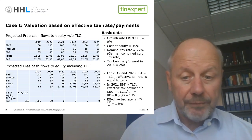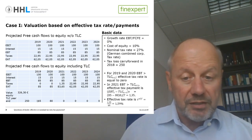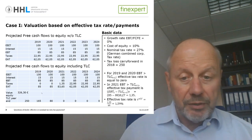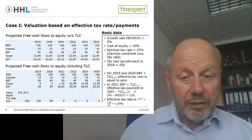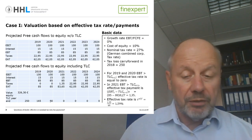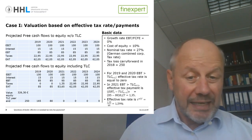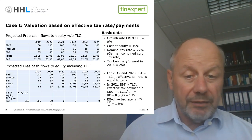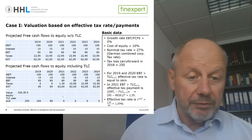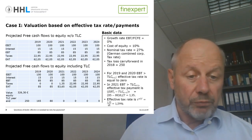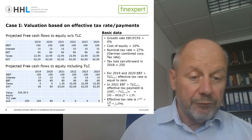We deduct the EBT from the tax loss carry forward, leaving 165 at end of year. In the next year, our EBT is again lower than the carry forward at the beginning of the period, so we pay no taxes again and net accordingly. Finally, in 2021, our tax loss carry forward at the beginning of the period is 80, and our unadjusted tax base is 85. We net the two, giving an adjusted tax base of 5, which is taxed at 27%, yielding a tax payment of 1.35.